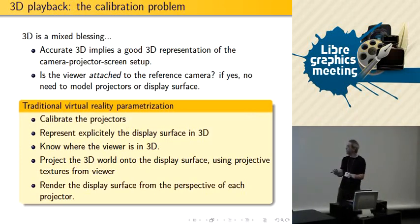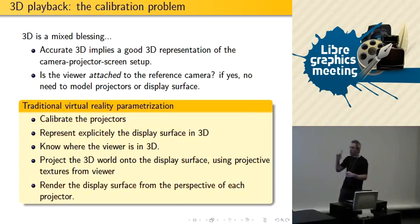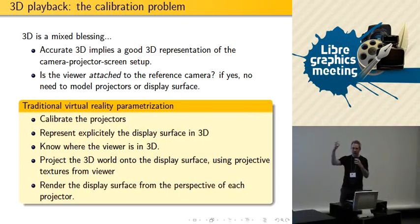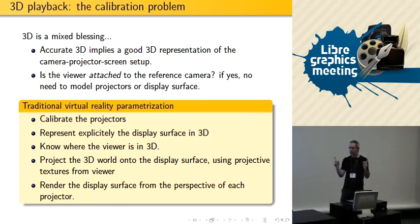Now for 3D: to do accurate 3D you need accurate camera calibration. In the LightWist system, because the camera is there, you don't need to know the 3D position of the projector itself — it could be anywhere. All you need to model is the camera and the screen.